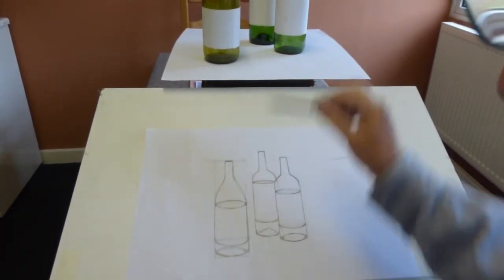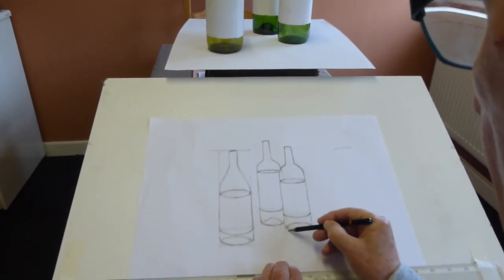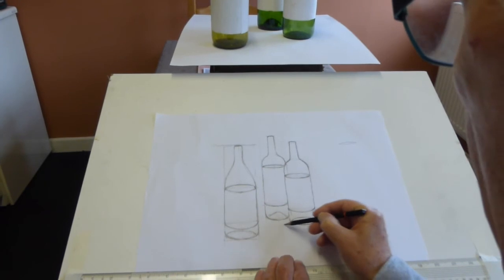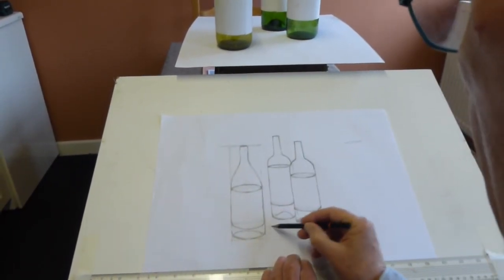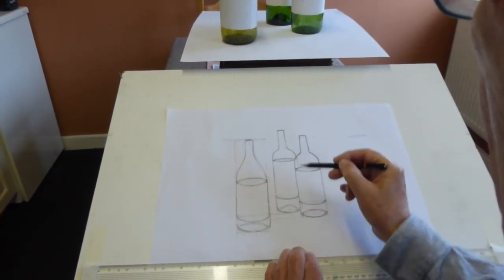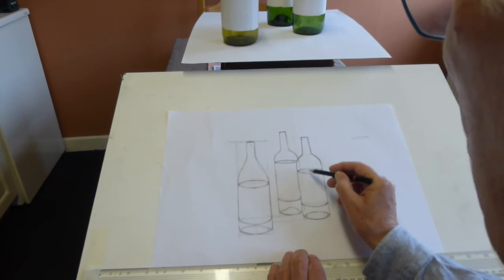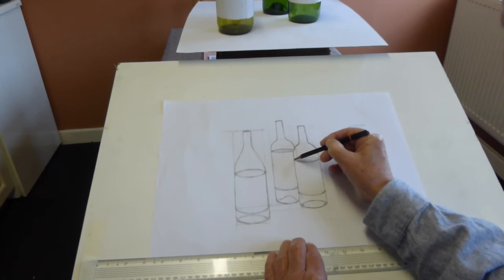And I can look across, and I can see where that comes in relation to the bottle there. Do the same there. I can see where the bottom of the bottle comes in relation. Looking across here, I can see where the labels come in relationship to each other. Getting those spaces right helps you get the drawing and things right.